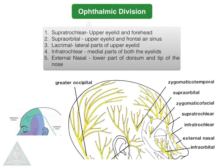Coming to the ophthalmic division of the trigeminal nerve, the branches are the supratrochlear, which supplies the upper eyelid and forehead; supraorbital, which supplies the upper eyelid and frontal sinus; the lacrimal branch, which supplies the lateral parts of the upper eyelid; infratrochlear, which supplies medial parts of both eyelids; and external nasal, which supplies the lower part of the dorsum and tip of the nose.